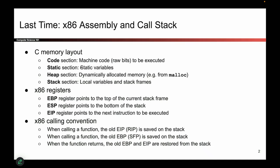We talked about the four sections of memory: code, static, heap, and stack. We talked about the three registers that x86 uses to keep track of the stack frame — EBP at the top, ESP at the bottom of the current stack frame, and EIP is the instruction pointer.